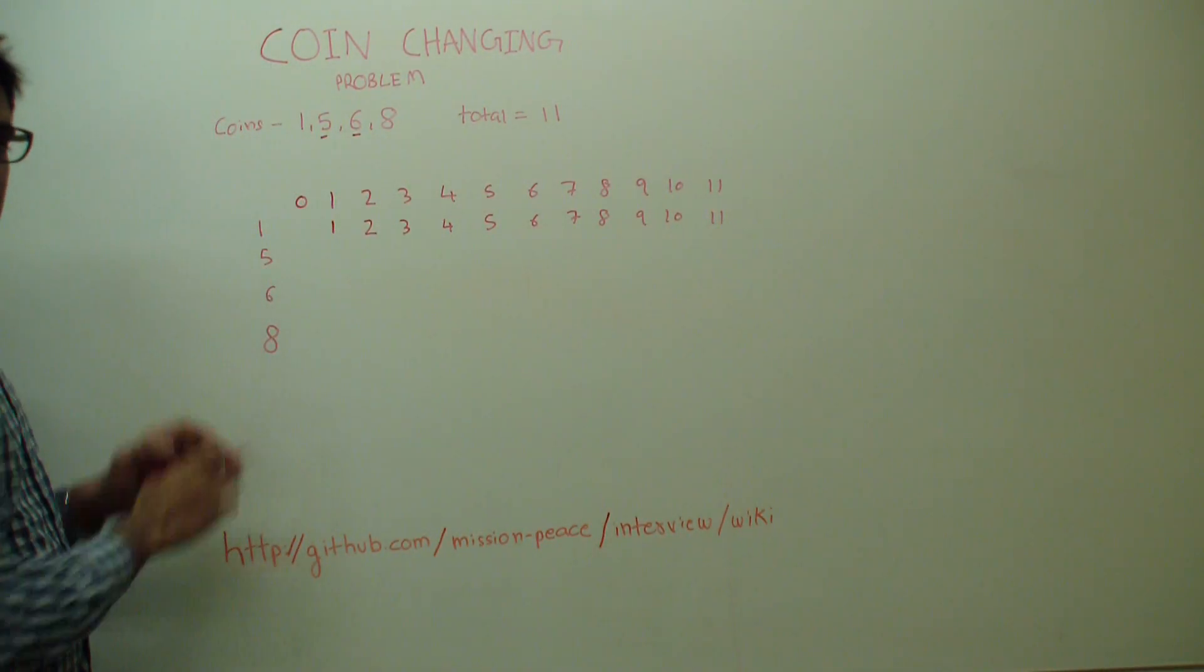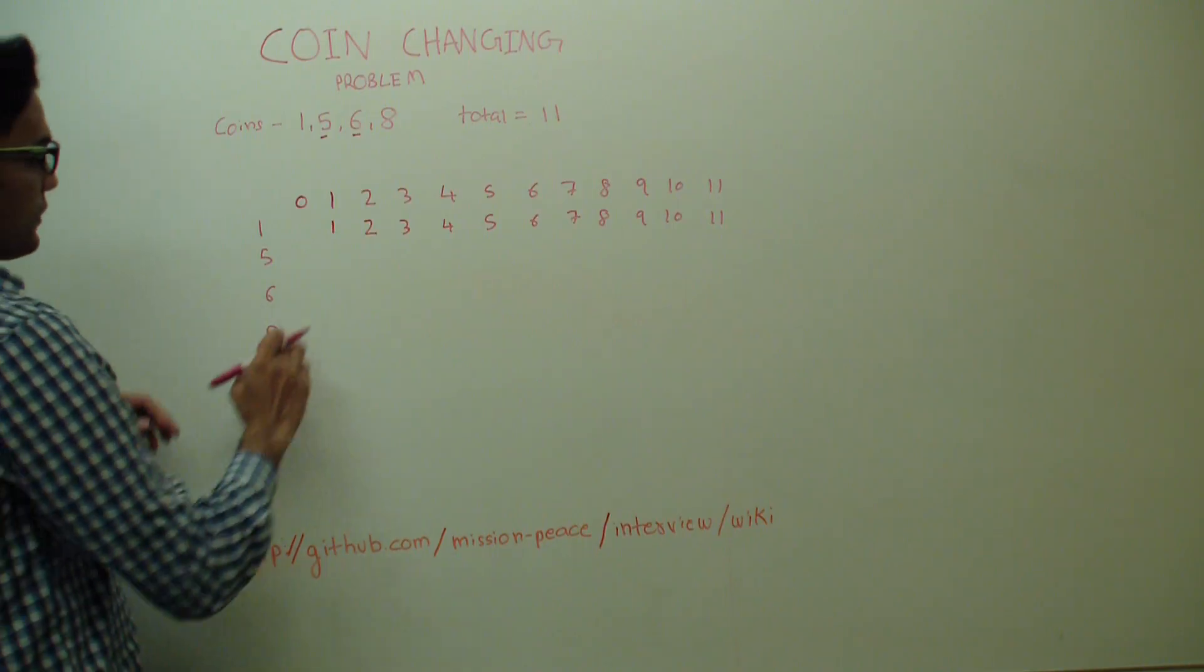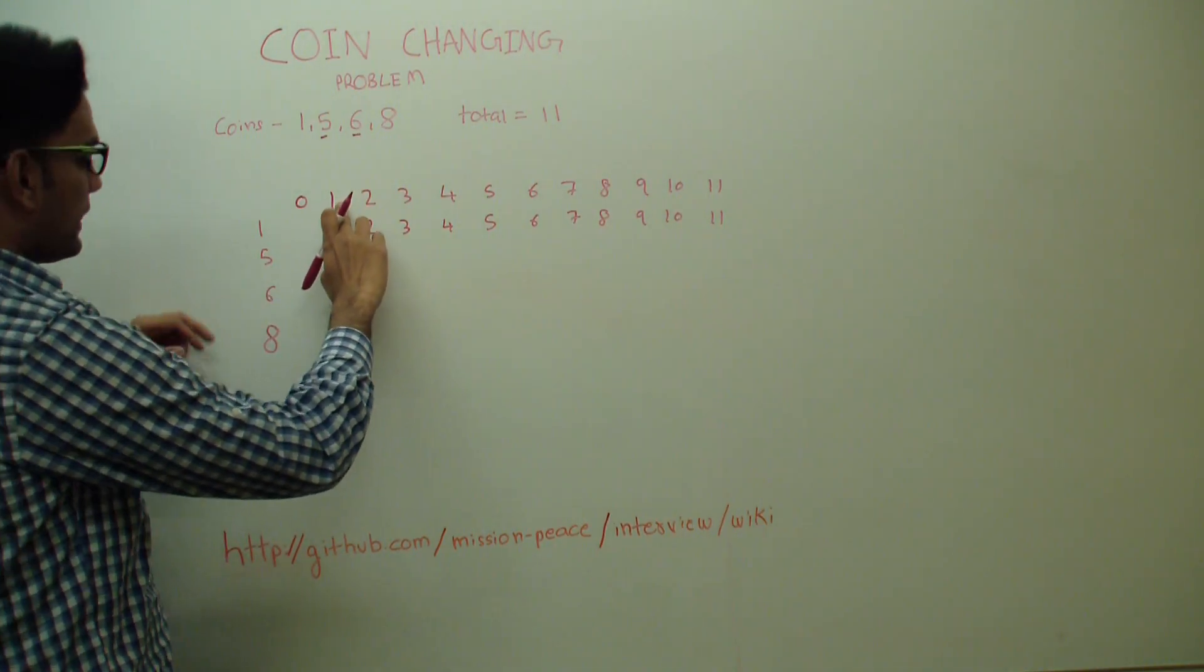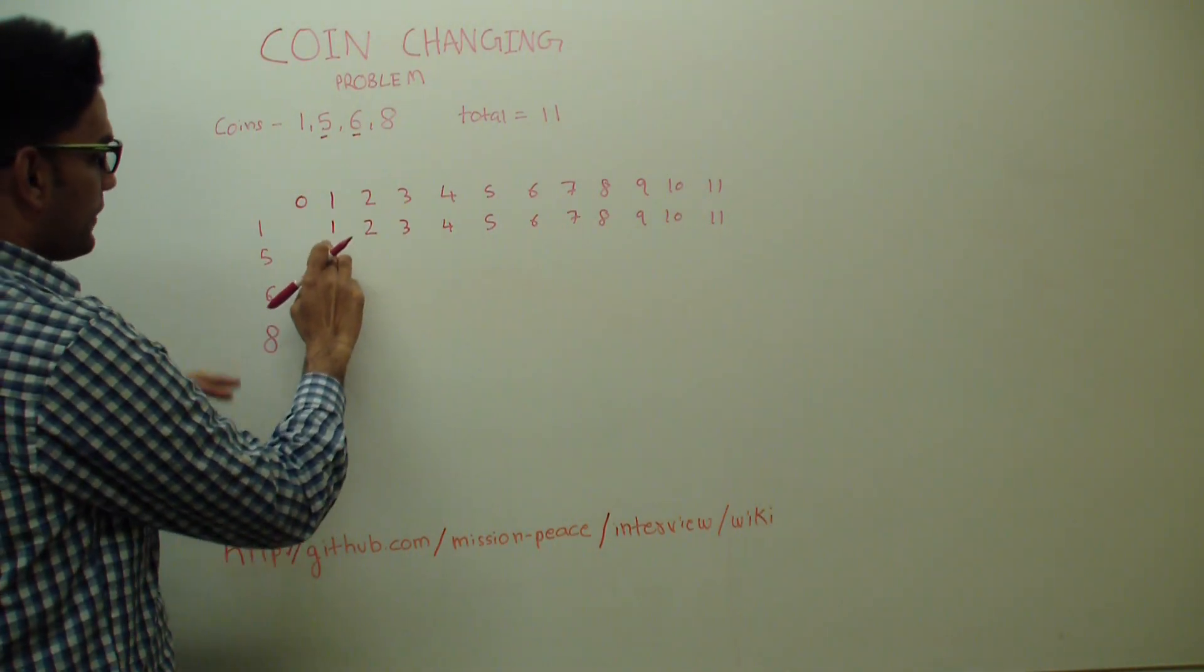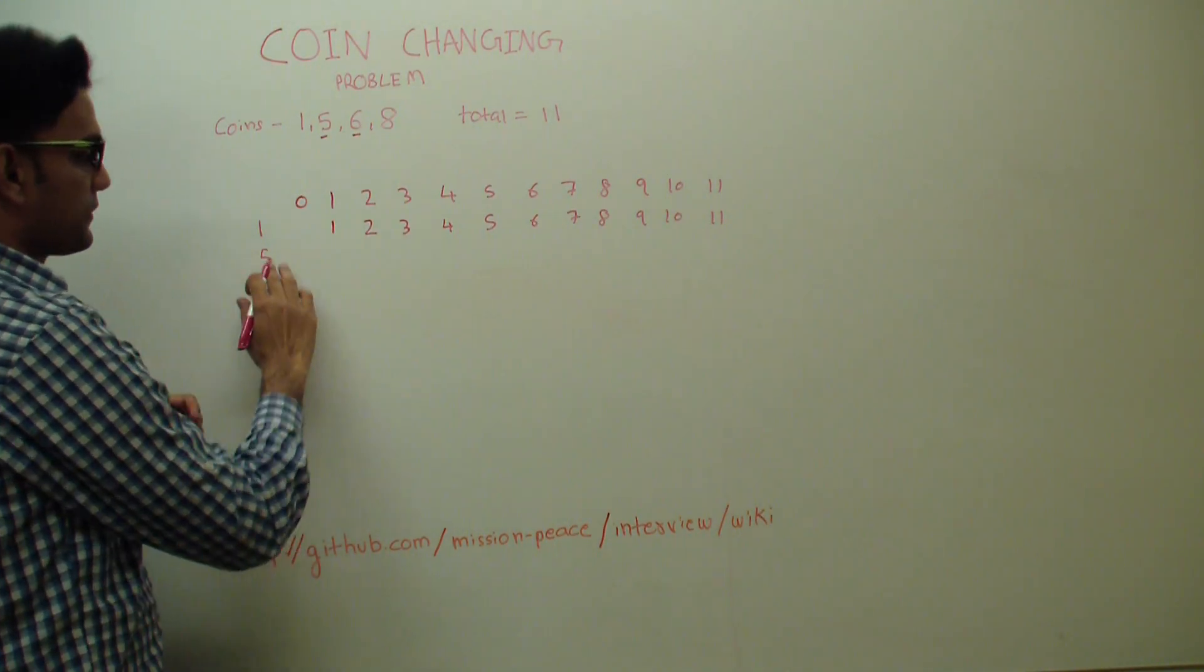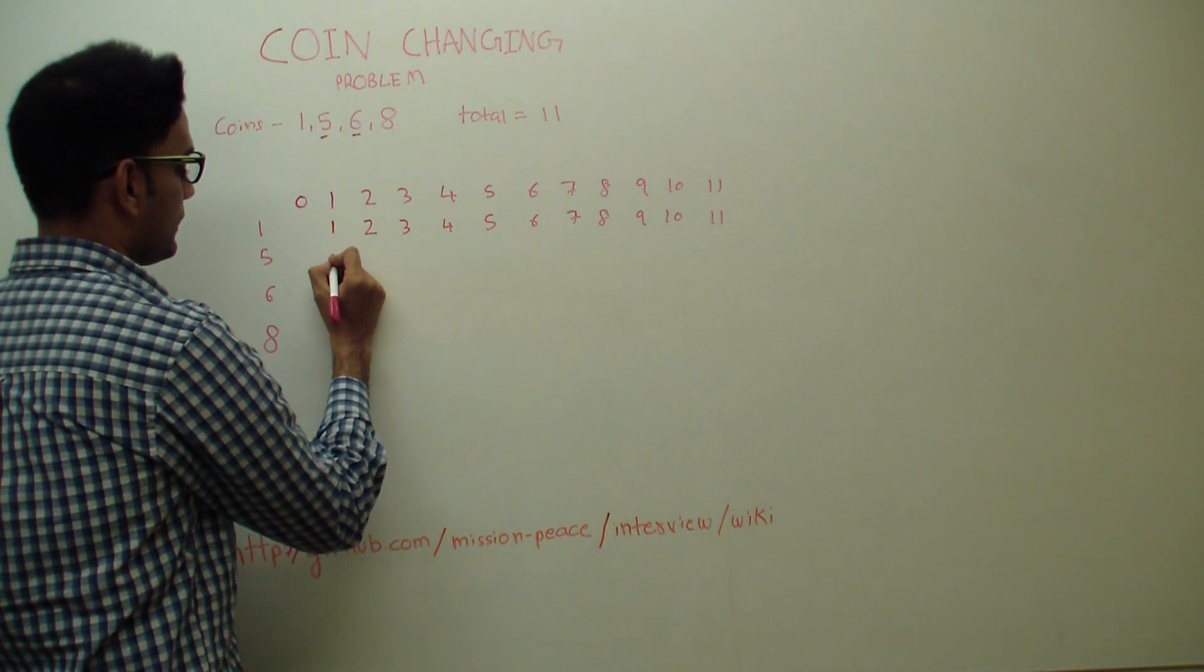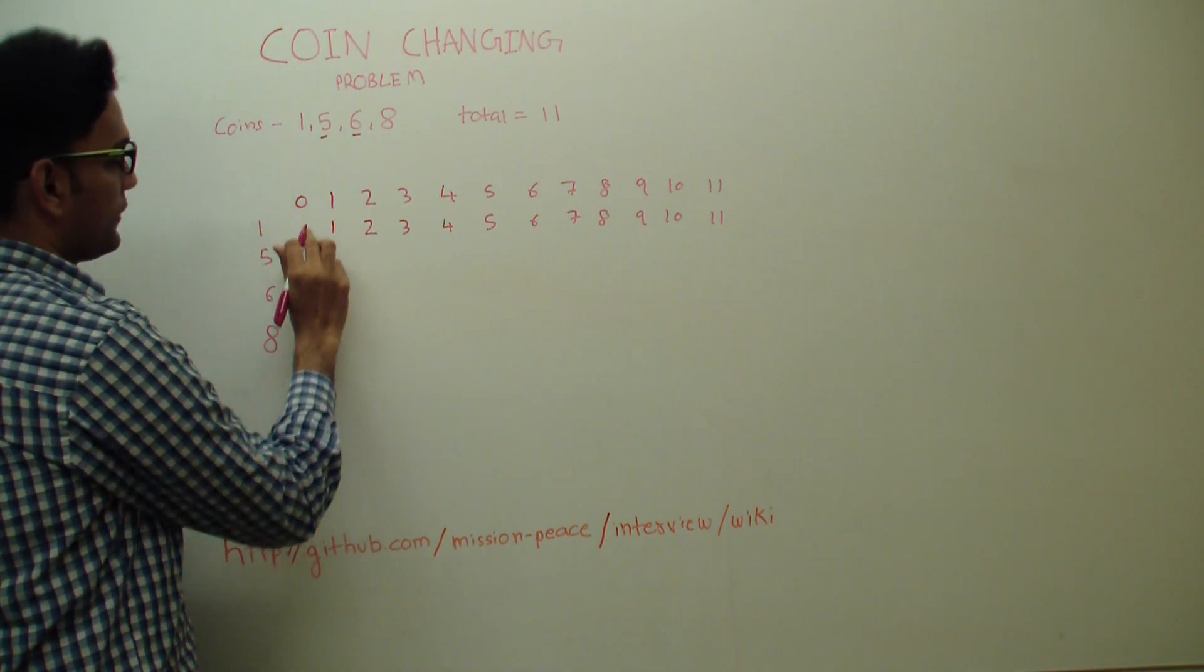Now let's introduce 5 into the picture. So now we have total of 1 and we have 2 coins, 1 and 5. Can we do any better than 1? I guess not. Because 5 is not going to play any role here. So 1 again. So value is coming from the top.